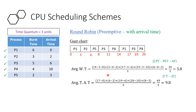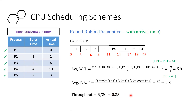Turnaround time is completion time minus arrival time. P1: completion 17, arrival 0. P2: completion 6, minus arrival 2. P3: completion time 19, minus arrival time 6. The total gives 49 divided by 5, which equals 9.8 units average turnaround time. Throughput is the same: 5 divided by 20, which is 0.25. This was the round-robin preemptive scheduling scheme with arrival time.